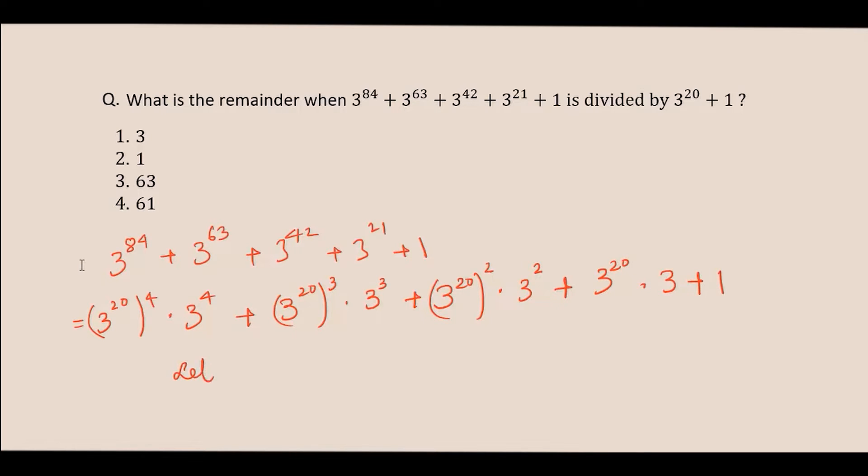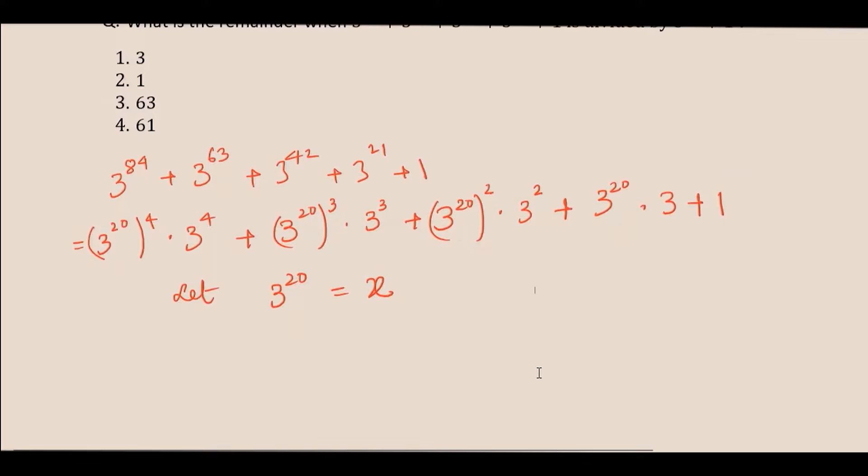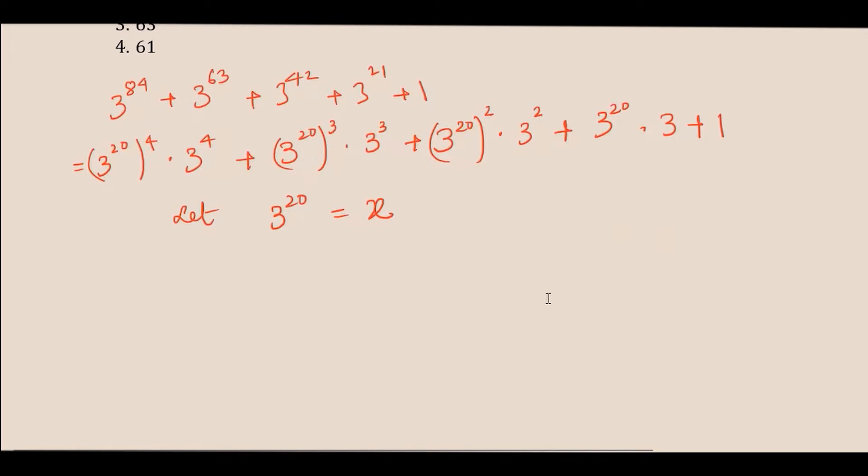Now just let 3 to the power 20 be x. Just put the value of x in this equation. You will get 3 to the power 4 can be written as 81x to the power 4, 3 to the power cube can be written as 27x cube plus 2 to the power square can be written as 9, and this is x squared plus 3x plus 1.